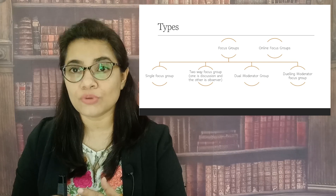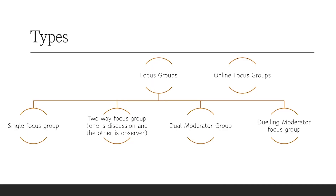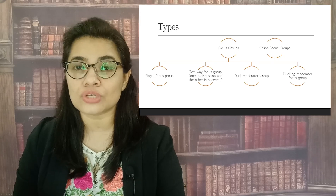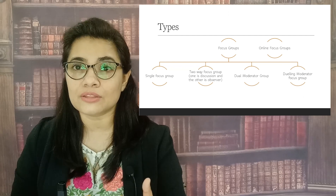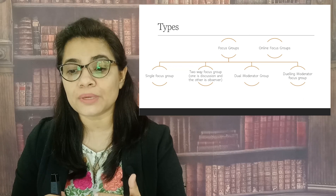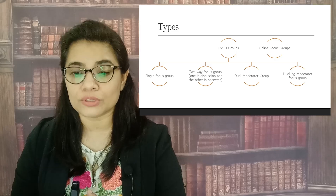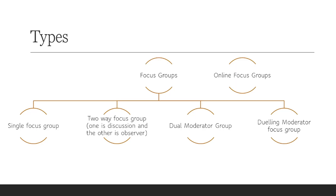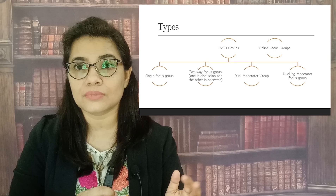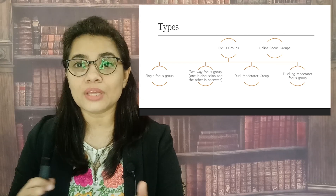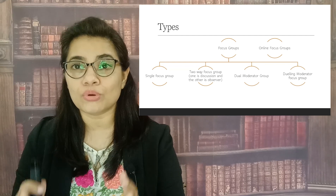Here are the types of focus groups. Mainly there are two types: physical focus groups and online focus groups. Under these two broader categories, we have further four types. Single focus groups, which is the traditional one with one moderator or facilitator and members — mainly 12 to 14 — for the discussion purpose. Then we have two-way focus groups, where one group is for discussion and the other group plays the role of observers. When one group is discussing the topic, the other is observing, and then the roles are reversed — the observer group joins the discussion group, and the discussion group now acts as observers.